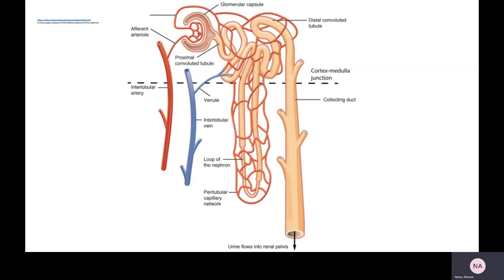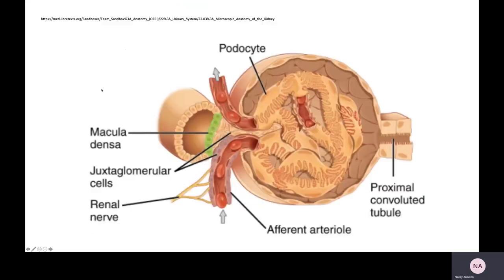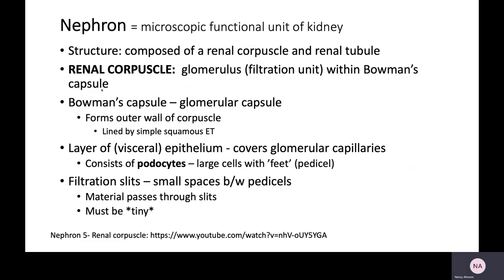There is an afferent arteriole bringing blood into the glomerulus, and then there's an efferent arteriole bringing it out. The nephron is the microscopic functional unit of the kidney. It is composed of the renal corpuscle and the renal tubule. The renal corpuscle is the glomerulus — the actual filtration unit — which resides within Bowman's capsule.